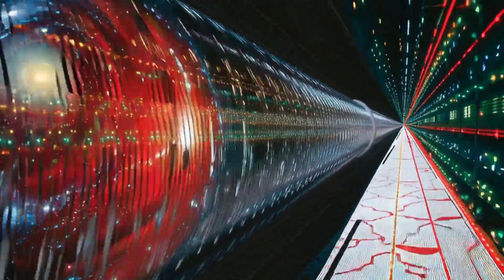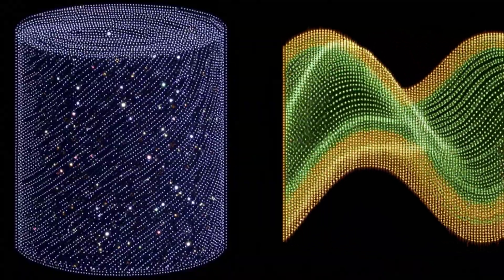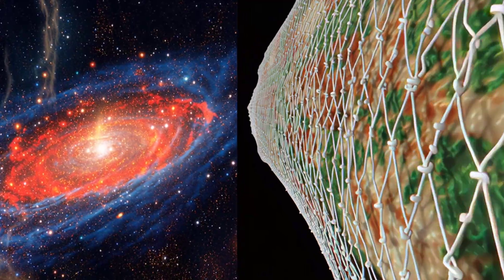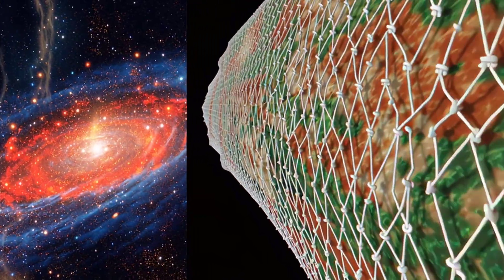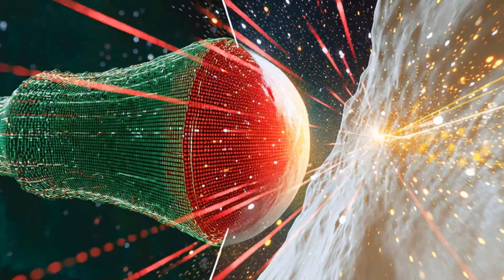The planets trace graceful arcs in the sky. Rivers carve smooth valleys, and light pours across space, as if in an unbroken stream. From the human and cosmic perspective, the universe presents itself as a seamless fabric. Doesn't it feel natural to assume that continuity is the fundamental truth of reality?